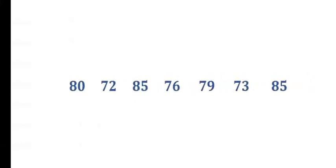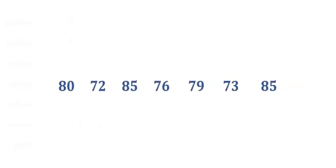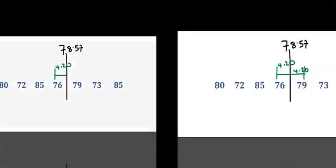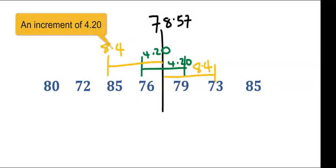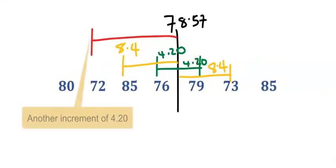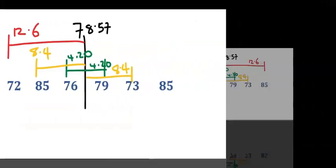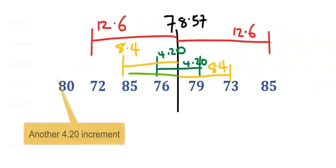What have we calculated? The mean was obtained to be 78.57. Let's assume that 78.57 is here. While the distance from the mean to the next point is 4.20. The next distance is going to be 8.4. While the next distance is going to be 12.6. The next distance is going to be 16.8.